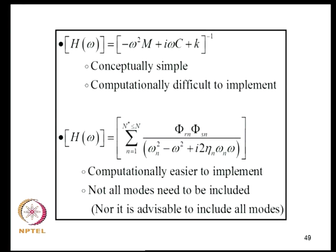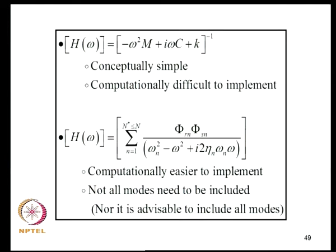In practice, although the FRF summation runs over all N modes, we seldom include all modes. In a 100-degree-of-freedom system, perhaps only 10 modes are used to compute the answer. How many modes should be included in a dynamic analysis is a question we will address in due course. It is important to appreciate that although an N-degree-of-freedom system admits N normal modes, we will not use all N modes in the response representation.